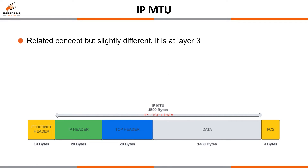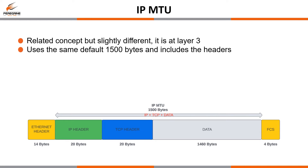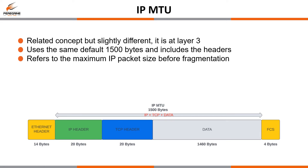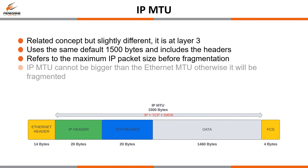While the IP MTU is related to the Ethernet MTU, they are slightly different. It runs at layer 3 as opposed to layer 2 and uses the same default 1500 bytes sizing, but unlike Ethernet it includes the headers. It refers to the maximum IP packet size before fragmentation occurs. IP fragmentation is the process of breaking packets into smaller pieces known as fragments so they can pass through a link with a smaller MTU. The IP MTU cannot be bigger than the Ethernet MTU, otherwise it will be fragmented.